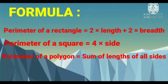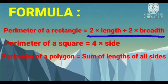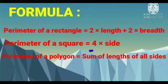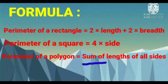For finding the perimeter of a rectangle, the formula is 2 × length + 2 × breadth. For finding the perimeter of a square, the formula is 4 × side. And for finding the perimeter of a polygon, the formula is the sum of the lengths of all the sides.